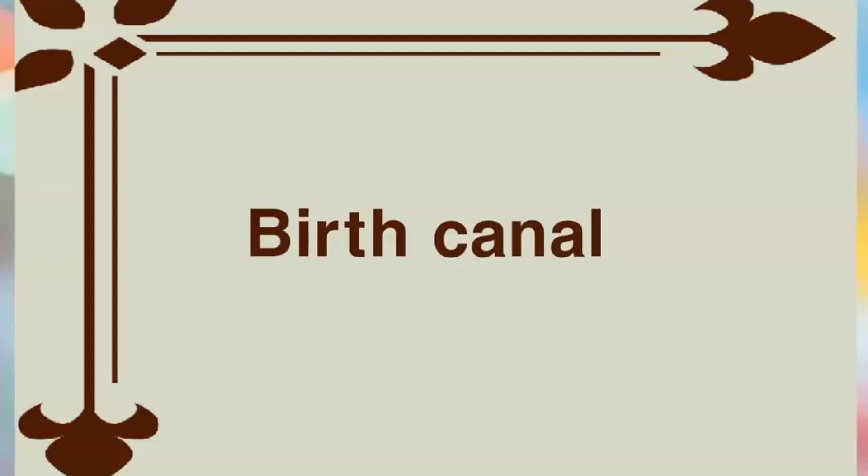One is the inner layer called the endometrium. It is the most active layer and responds to cyclic ovarian hormone changes. The endometrium is highly specialized and is essential to menstruation and reproductive functions.